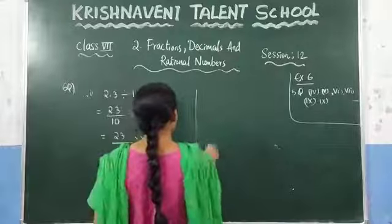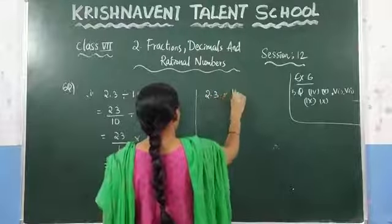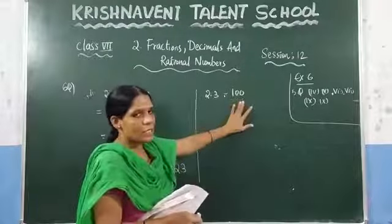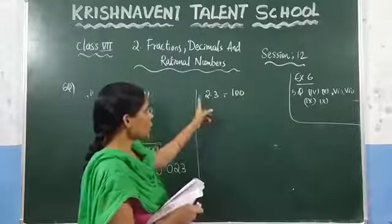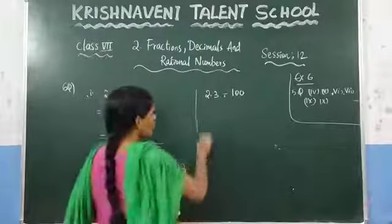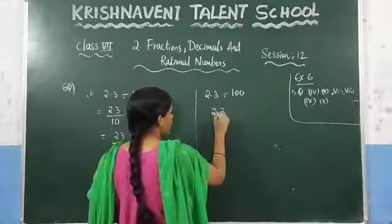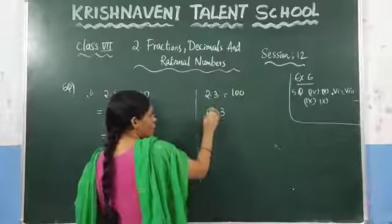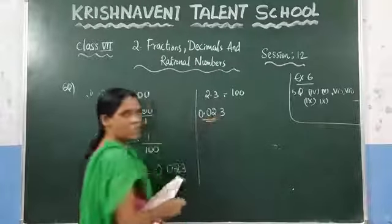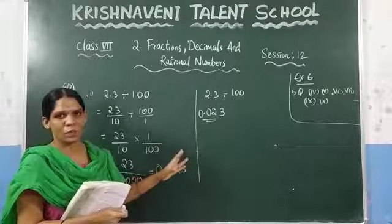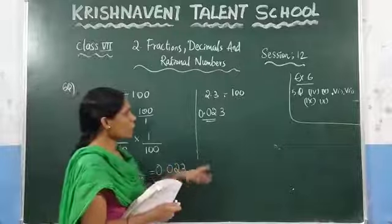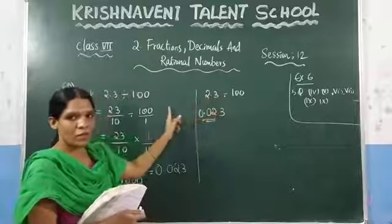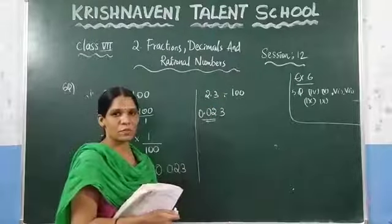The other method — the shifting method: 2.3 divided by 100. Since there are two zeros, shift the decimal point two numbers to the left. The number is 2.3, so shifting two places left gives 0.023. This method gives the answer in one step — just count the zeros and shift the decimal point to the left that many places.